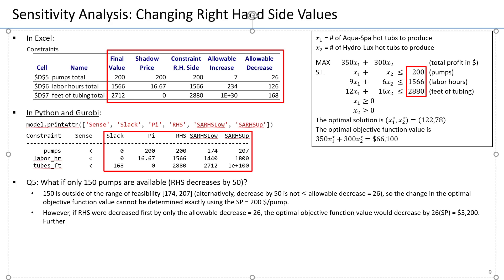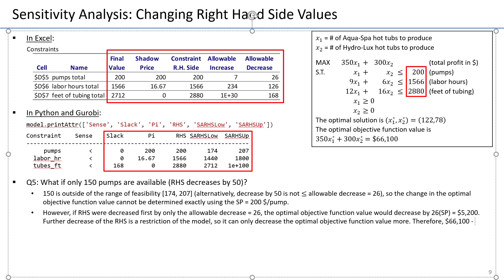Further decrease of the right-hand side is a restriction — we're contracting the feasible region, making it smaller, with fewer choices. So it can only decrease the optimal objective function value more. Therefore, $66,100 minus $5,200, which equals $60,900, is an upper bound on the optimal objective function value. It may be this value or it may be less.